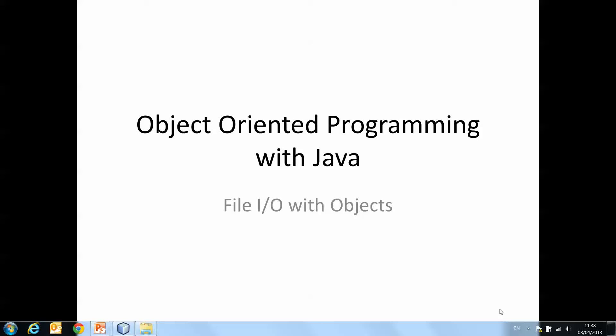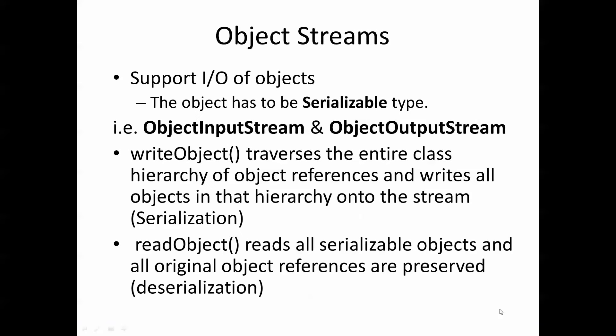Hi there. Previously we looked at file I/O for text, which of course has its benefits, but even more useful is the ability to write whole objects to a file. The approach is fundamentally the same — we simply use different streams when working with objects. So let's take a look at those streams.